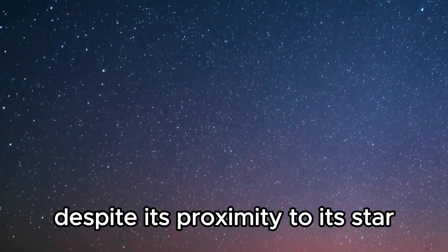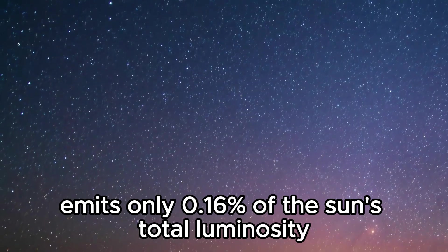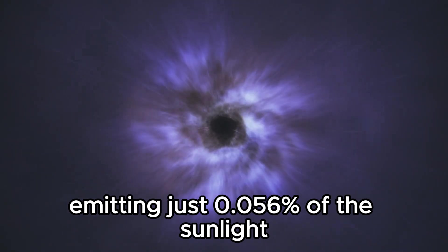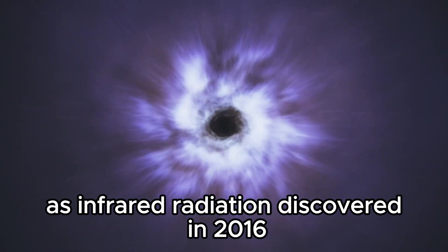Despite its proximity to its star, Proxima Centauri emits only 0.16% of the Sun's total luminosity. In the visible light spectrum, it appears much dimmer, emitting just 0.056% of the sunlight. Most of Proxima's energy is emitted as infrared radiation.